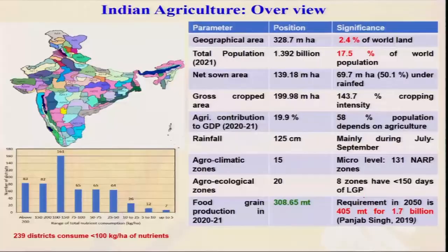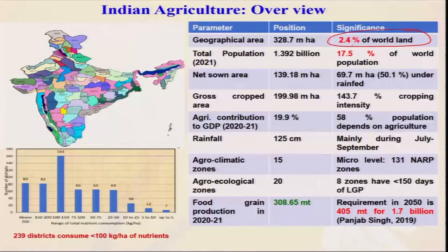In Indian agriculture, we have only 2.4 percent of the world's water resources, but we have to feed 17.5 percent of the world's population. Our current population is 131 crore. We have to sustain this 2.4 percent area, and this area will not increase — some parts are used for roads, airports, factories, and lots of area is also degraded. So our agricultural area is reducing while our population is increasing. This is a tremendous challenge for agricultural scientists, policy makers, and farmers — how to feed our future population.